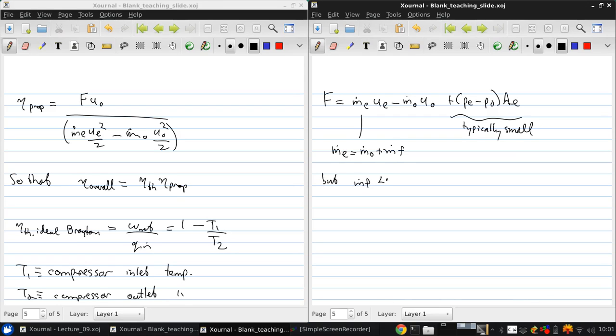But m dot f is much, much smaller than m dot 0. So we can approximate this and say that m dot e is approximately equal to m dot 0, which we'll just call m dot. So since this second term is also typically small,